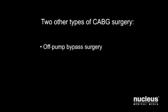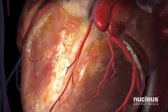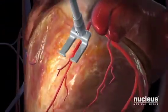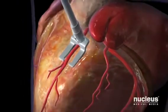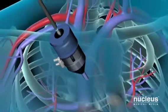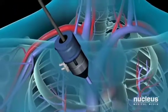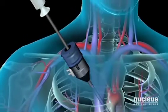When the surgeon chooses to do the surgery without using the heart-lung machine, the heart continues to beat. This may be referred to as off-pump bypass surgery or minimally invasive surgery. Instead, a mechanical device is used to steady the part of the heart where grafting is being done. Surgeons perform minimally invasive bypass procedures using specially designed instruments inserted through small incisions or ports in the chest.